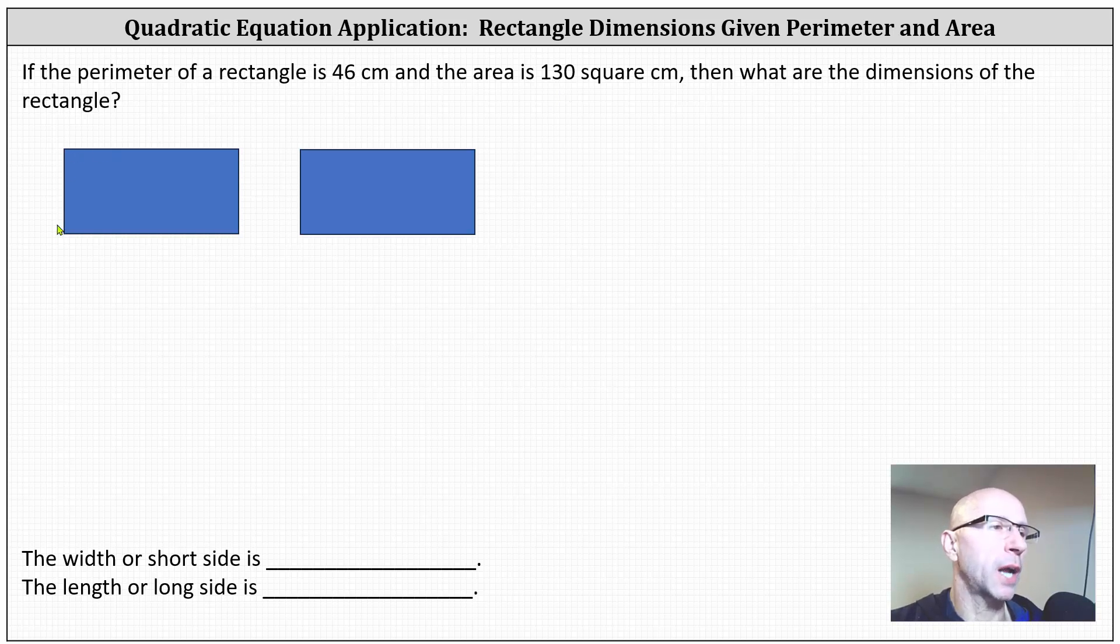We'll let the length of the short side be x and the length of the long side be y. So we know on the left, the perimeter is equal to 46 centimeters. On the right, the area of the same rectangle is equal to 130 square centimeters.